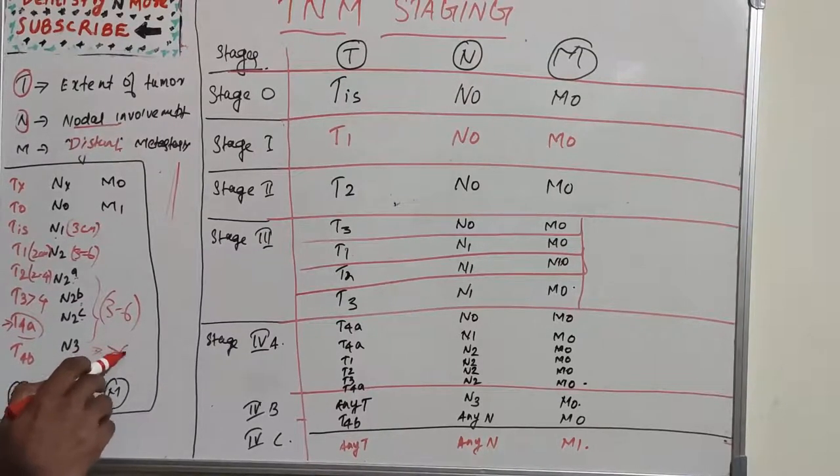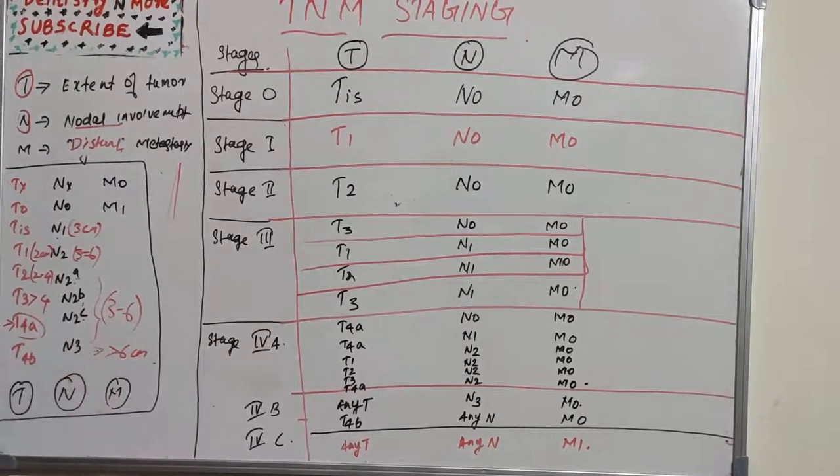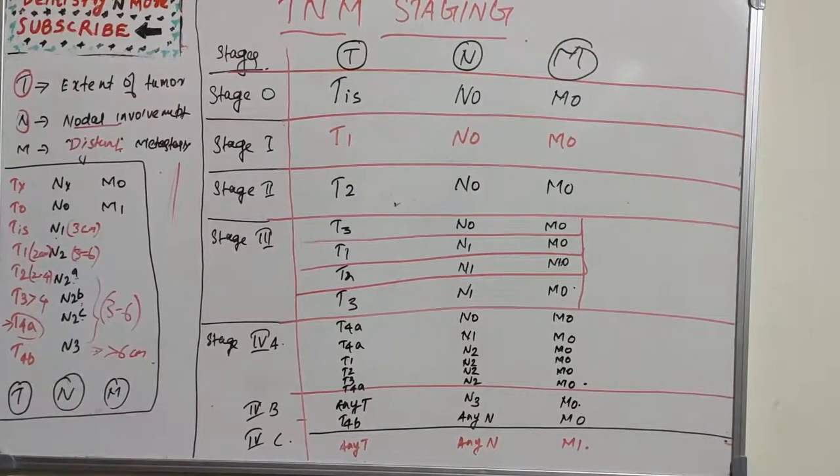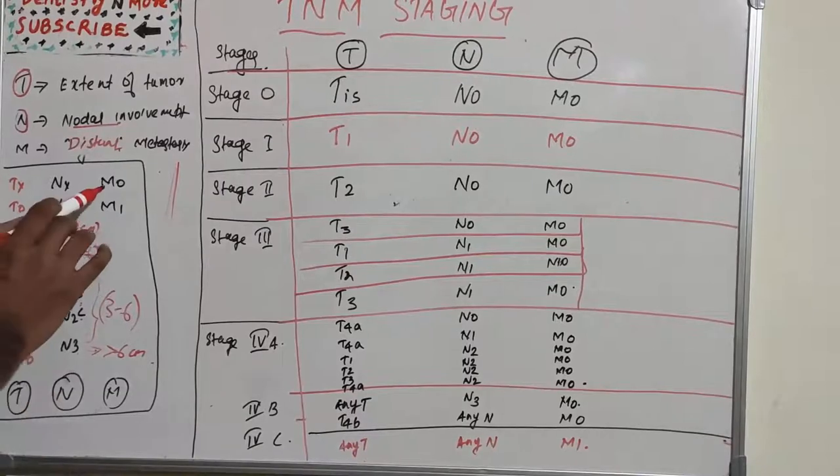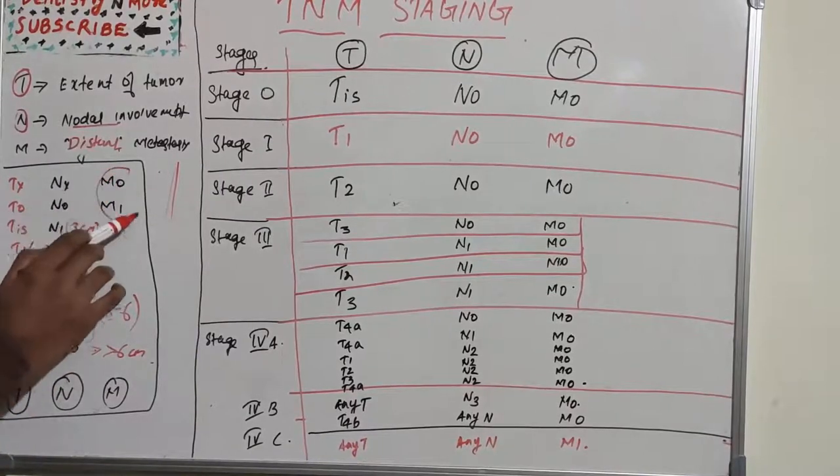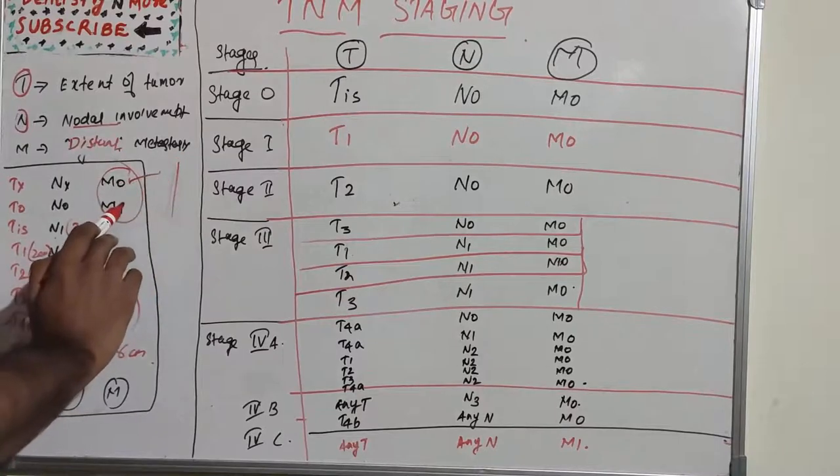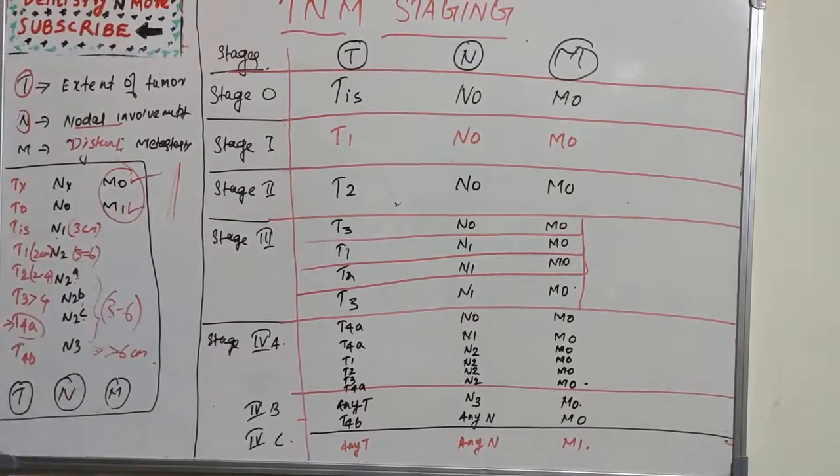N3 is metastasis in a lymph node more than 6 centimeters in greatest dimension. That's about nodal involvement. The metastasis M is very simple: M0 or M1, meaning distant metastasis is absent or distant metastasis is present.